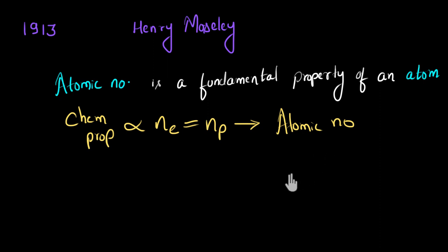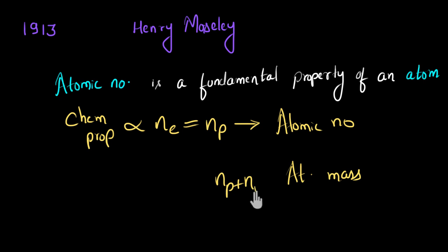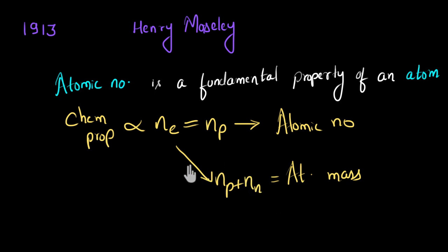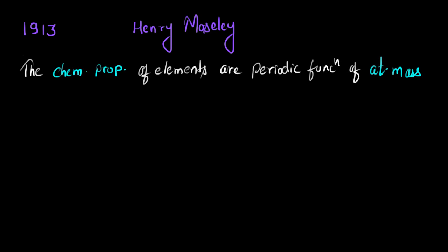So you can see how chemical properties are dependent on the atomic number and have nothing to do with atomic mass. Atomic mass is basically the number of protons plus the number of neutrons — and this has no direct relationship with the number of electrons. That's why atomic mass does not decide the chemical properties of an atom. Based on this finding, Moseley suggested changing the periodic law: the chemical properties of elements are a periodic function of atomic number, not atomic mass.